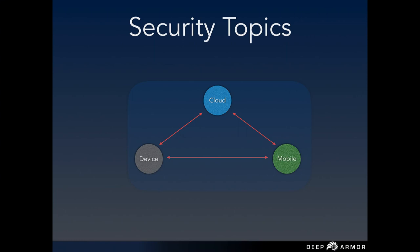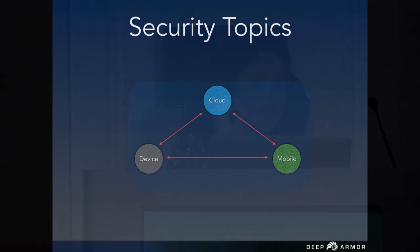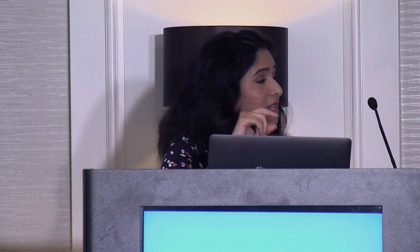To recap the wearable and IoT ecosystem: it consists of three major components — the device, the mobile or companion application, and the cloud. It's not just sufficient to secure one of these components; it's also very important to secure the interfaces, the infrastructure, and the entire ecosystem as a whole. The compromise of one single component could open up a much larger attack surface and could compromise the entire ecosystem — which we'll later refer to as the butterfly effect.